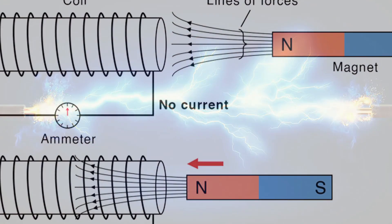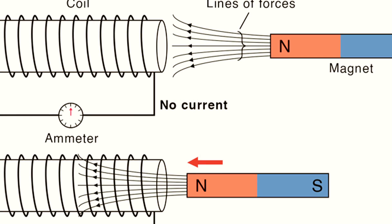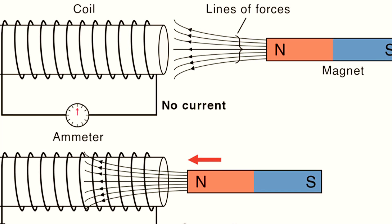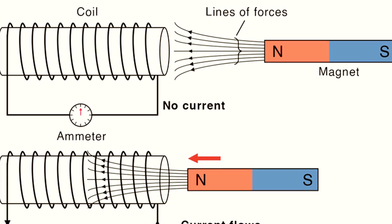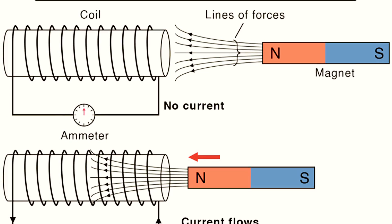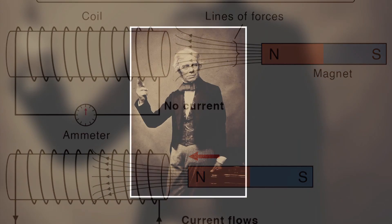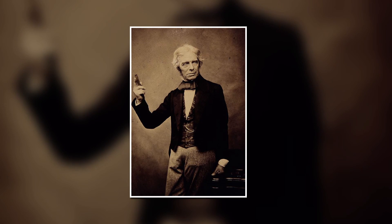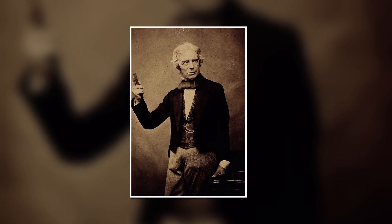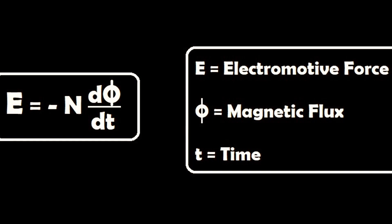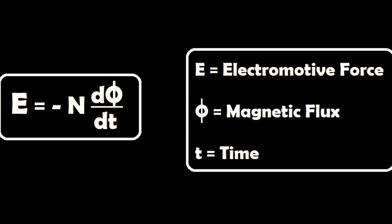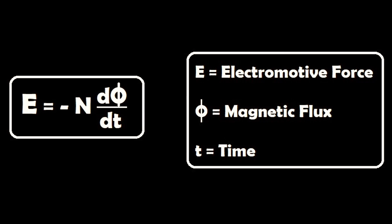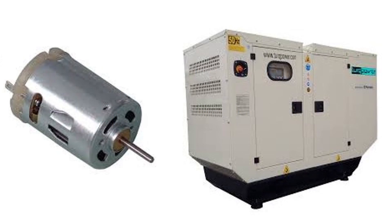Electromagnetic induction is the process by which a changing magnetic field induces an electric current in a conductor. This phenomenon is the basis for many electrical devices, such as transformers, generators, and motors. According to Faraday's law, the magnitude of the induced electromotive force, or EMF, is directly proportional to the rate of change of the magnetic field. Mathematically, EMF equals dΦ by dT, where EMF is the induced electromotive force, φ is the magnetic flux, and T is time. This is the basis of how generators and motors work.